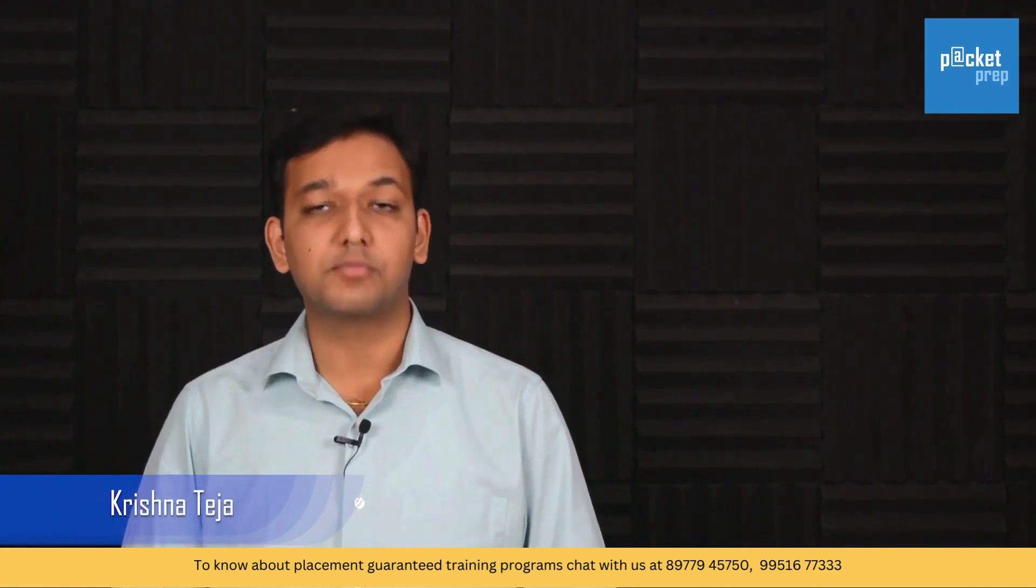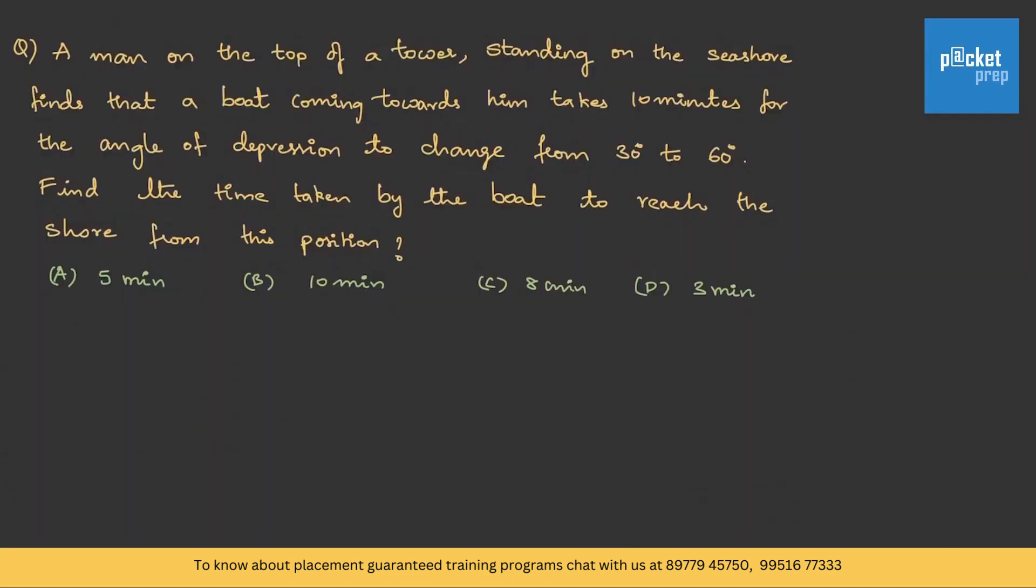Now let us get into type 2 questions, problems based on angle of depression. A man on top of a tower standing on the seashore finds that a boat coming towards him takes 10 minutes for the angle of depression to change from 30 degrees to 60 degrees. Find the time taken by the boat to reach the shore.